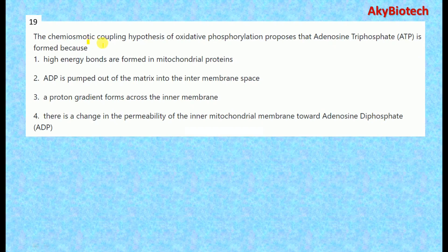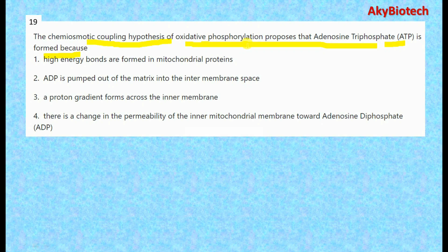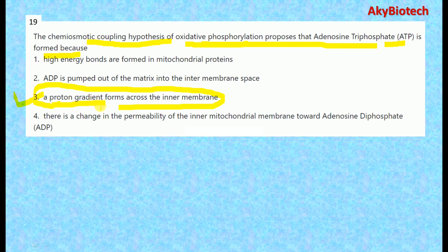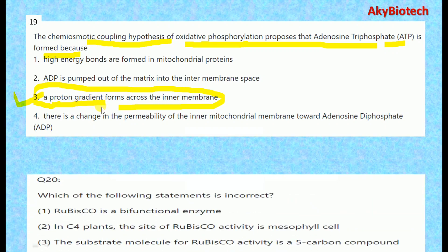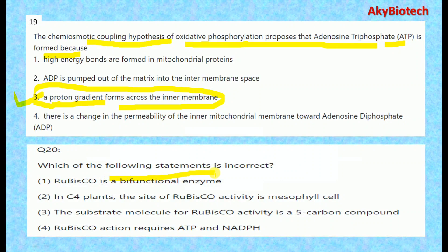Question nineteen: The chemiosmotic coupling hypothesis of oxidative phosphorylation proposes that ATP is formed because of a proton gradient that forms across the inner membrane during the electron transport chain — the oxidative phosphorylation process.